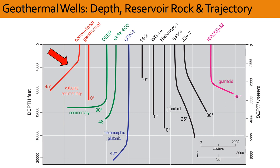On the far left, and shown in red, conventional geothermal wells are drilled to a maximum depth of about 3,000 meters, in stratigraphic successions dominated by volcanic and sedimentary rocks. It is common to see both vertical and directionally drilled wells, with the latter deviating up to 45 degrees from the vertical.